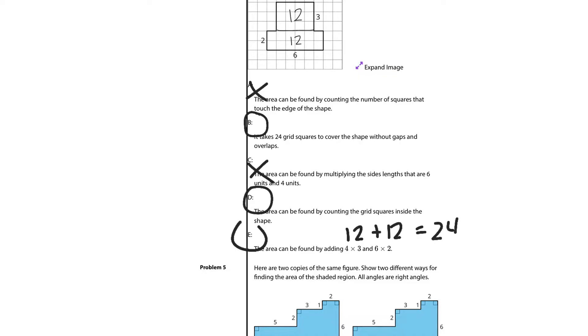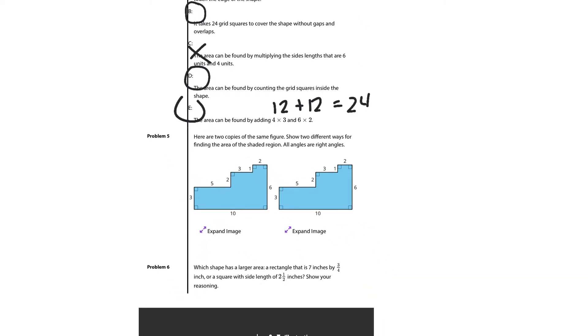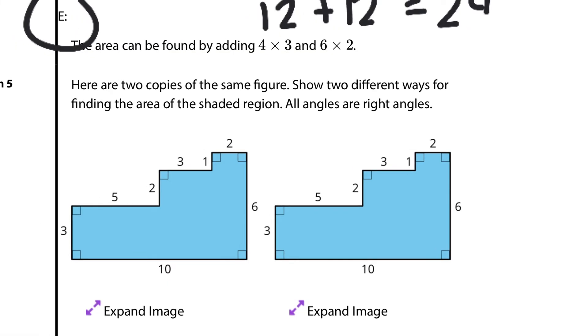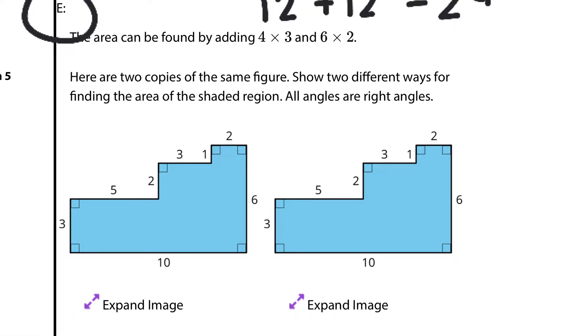And in question 5, here are two copies of the same figure. Show two different ways for finding the area of the shaded region. All angles are right angles. On the first one, what if I draw vertical lines? I come down here and come down here. And so, my rectangle on the left would be 5 times 3 is 15.